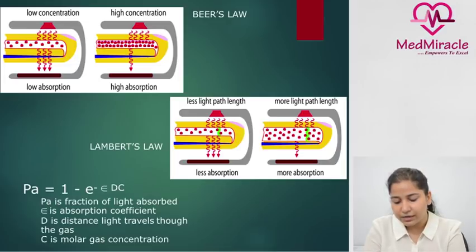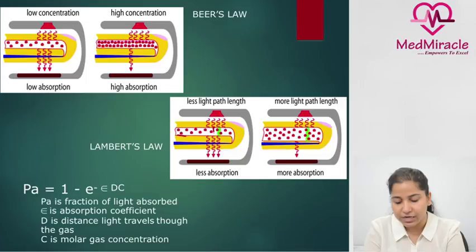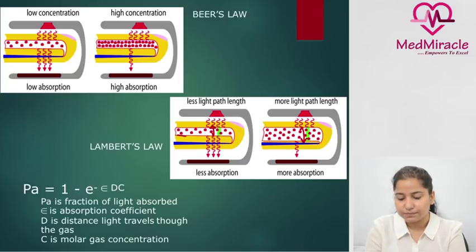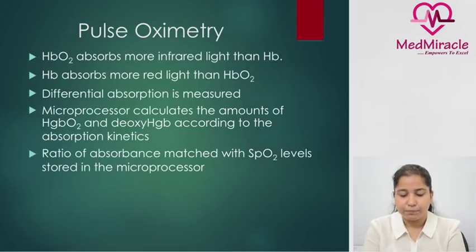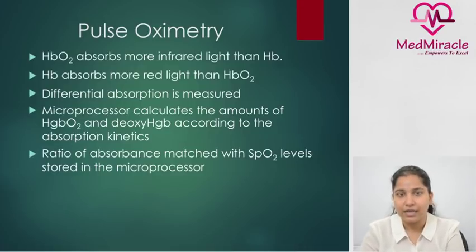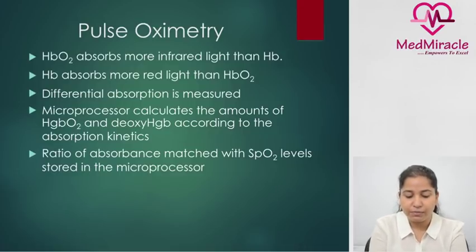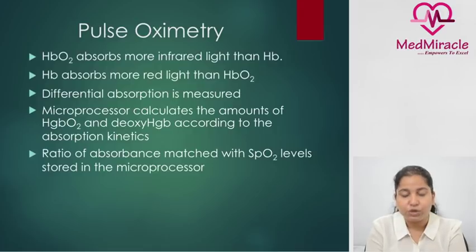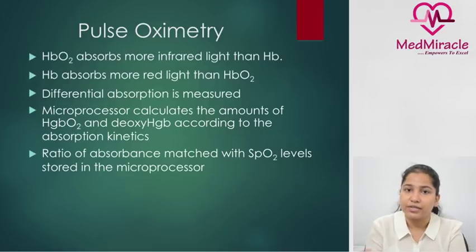As seen in the diagram, with vasoconstriction the path followed is less, so there is less absorption. With vasodilation, the path increases and there is more absorption. Oxyhemoglobin absorbs more infrared light than hemoglobin. Remember: oxyhemoglobin absorbs more infrared light and hemoglobin absorbs more red light.